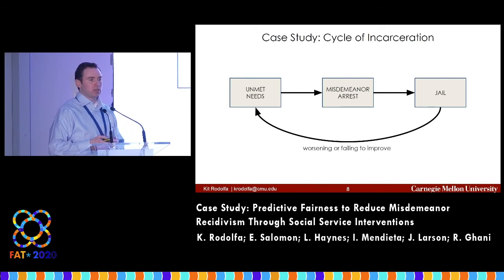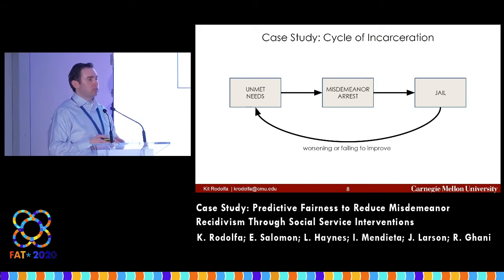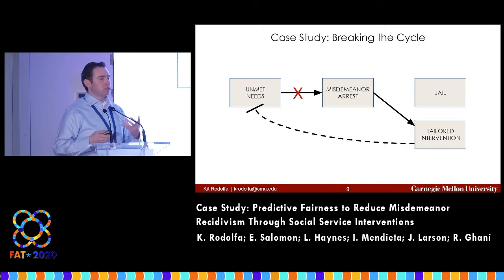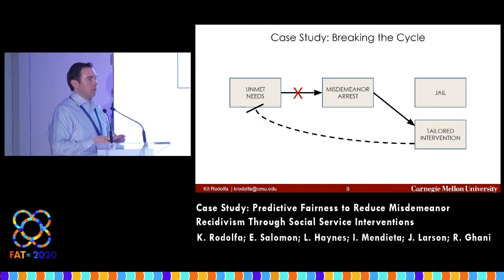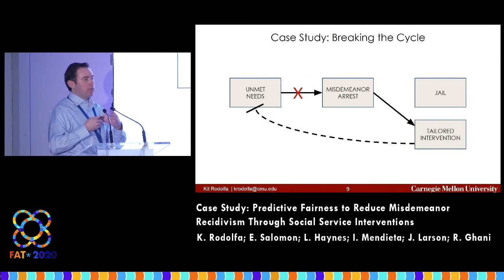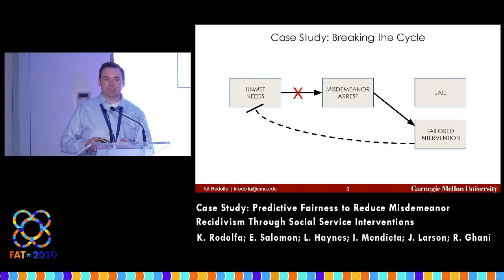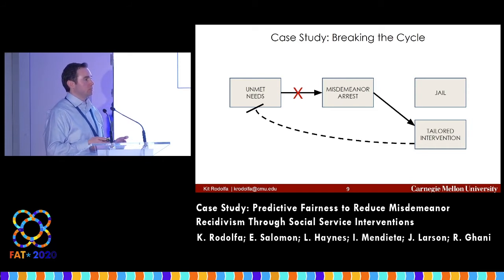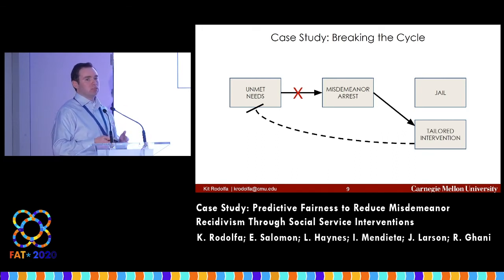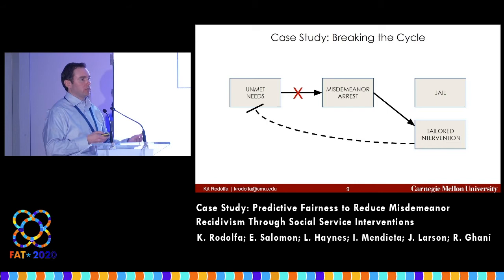This brings us to the case study: the cycle of reincarceration and how it relates to underlying unmet needs in different populations. The city of Los Angeles has been doing innovative work thinking about how to find alternatives to traditional prosecution — tailored interventions that help address unmet needs and break this cycle. These include community justice, restorative justice, connections to social service interventions, treatment plans, and drug diversions. Unfortunately, tailoring these interventions to particular cases is pretty resource-intensive for their office.